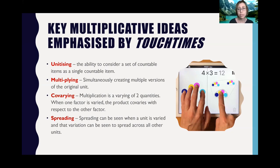Co-varying. Multiplication is a varying of two quantities. So when one factor is varied, the product co-varies with respect to the other factor. So co-varying or altering the pips affects each and every pod as well as the product. Spreading. This can be seen when a unit is varied and the variation can be seen to spread across all the other units. So as we've seen when you change the pips, this spreads across all of the other pods. And this idea emphasizes scaling or enlarging.